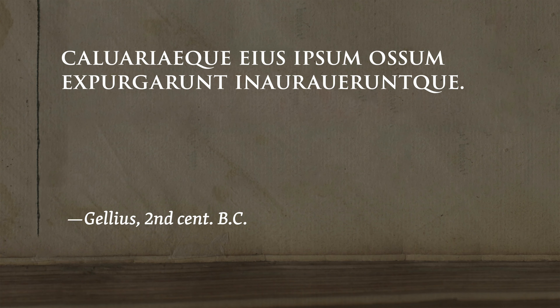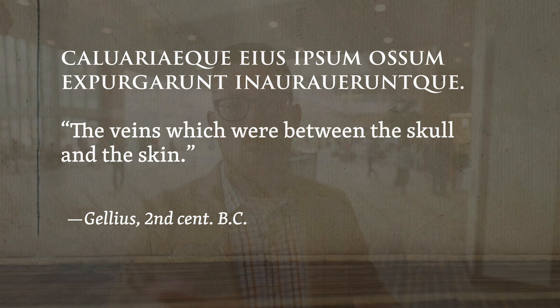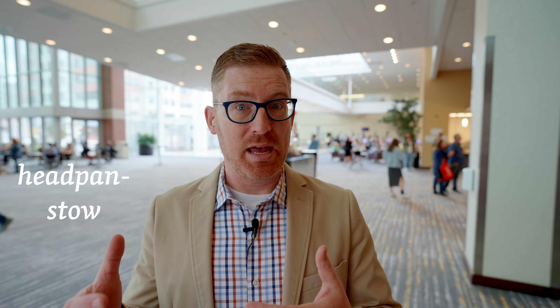The word the Latin Vulgate uses at Luke 23:33 is calvaria, and the simple meaning of that word in Latin is skull — just the plain old bone that protects your brain. The Oxford Latin Dictionary gives an example sentence from a writer named Gellius, who wrote in the second century before Christ, referencing 'the veins which are between the skull and the skin.' Old English had its own name for this place: they called it 'headpan stow.' Headpan was the Old English word for skull, and stow meant place, so headpan stow meant skull place.